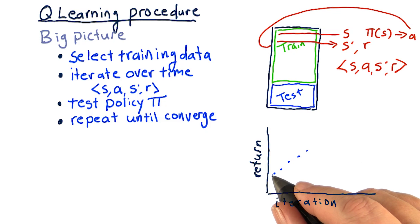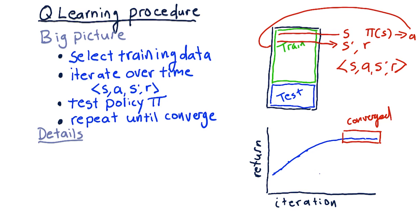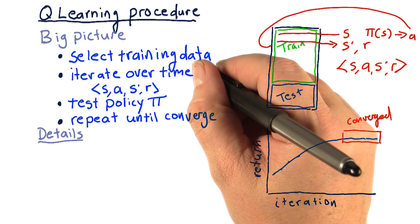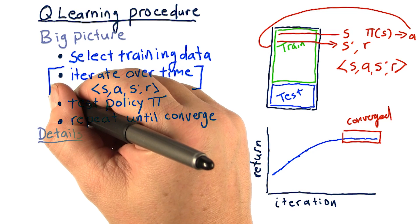So overall, the chart's going to look something like this. Eventually, we reach this regime where more iterations doesn't make it better, and we call it converged at that point. Let's consider now in more detail what happens here when we're iterating over the data.